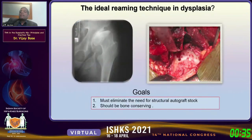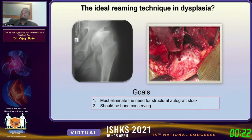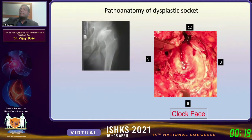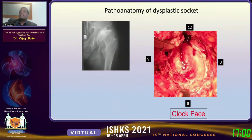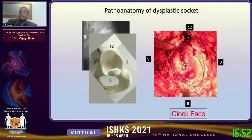The goals of the reaming technique are: eliminate the need for structural autograft, and be bone conserving. Looking at the anatomy of the dysplastic socket is very interesting. From an AP X-ray we think dysplasia goes from 6 o'clock to 12 o'clock — that's not so. It's like an egg that has fallen anteriorly, always in an oblique direction. In all dysplastic hips, there's an oblong shape with the deficiency falling anteriorly — that is the direction of dysplasia in all dysplastic cases.